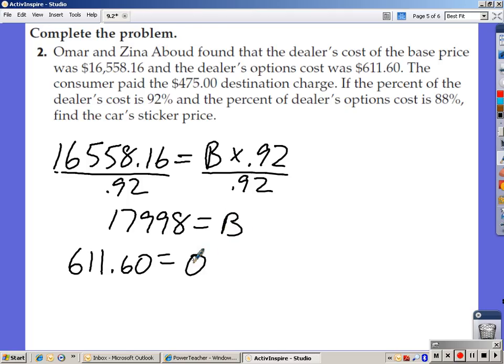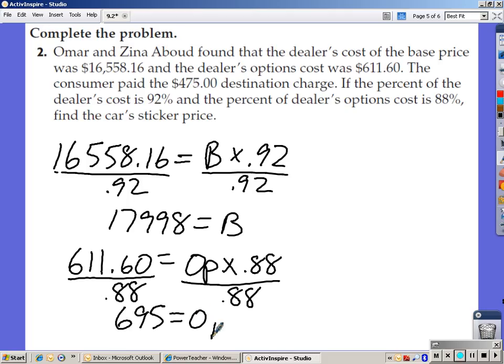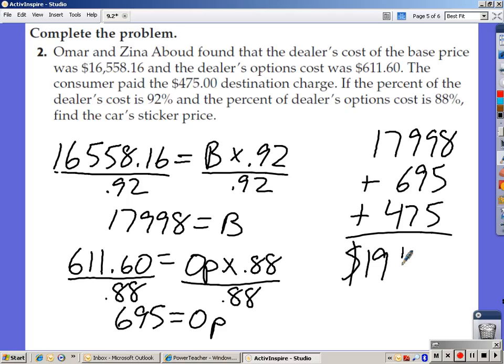The option price is 88%. So, we've got to divide both sides by .88. $611.60 divided by .88, that has to be $695 equals my options. Add your base of $17,998 plus your options of $695 plus the destination of $475. And you come up with $19,168. That was the sticker price.